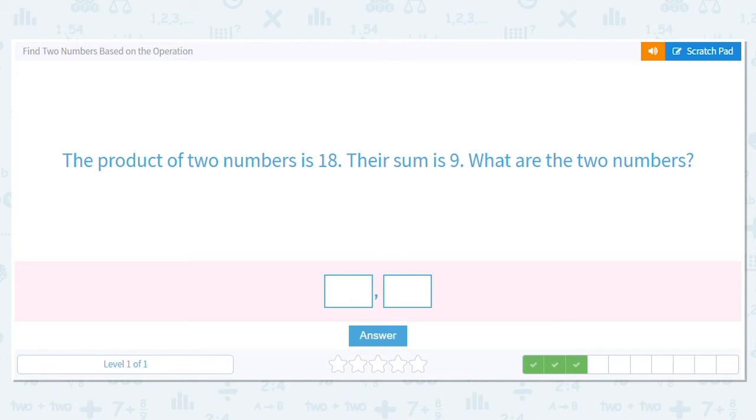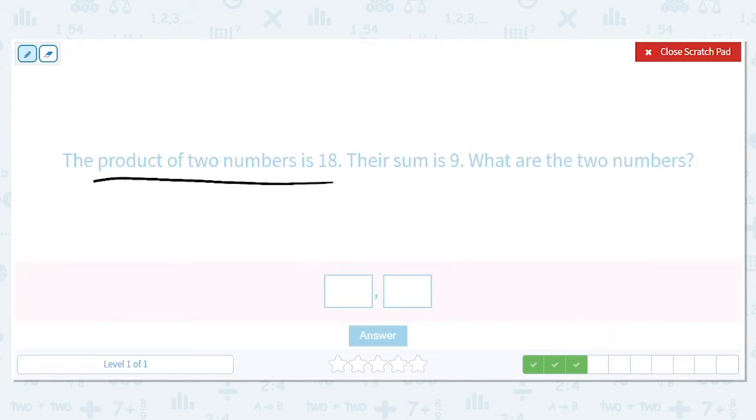All right, next one. The product of two numbers is 18 and their sum is 9. So we have to multiply two numbers to get 18, but also when we add them, they equal 9. So let's think of numbers that when I multiply, they equal 18.